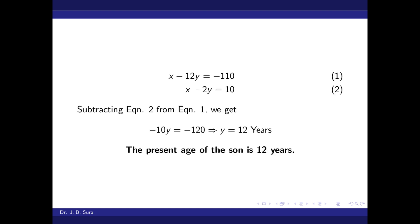So, we have two equations here. x minus 12y is equal to minus 110 and x minus 2y is equal to 10. If I subtract equation number 2 from equation number 1, what we get is minus 10y is equal to minus 120, which means y is equal to 12. The present age of the son is 12 years.